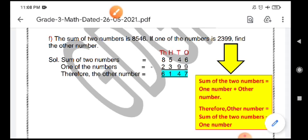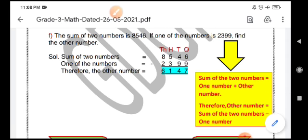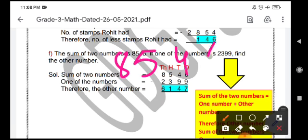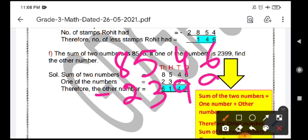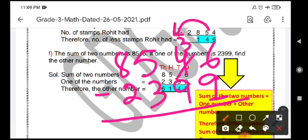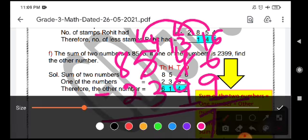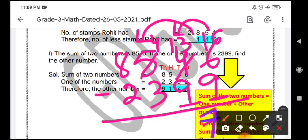So, we will subtract now these two numbers. That is 8546 minus 2399. More on floor, go to next door, get 10 more. Reduce it by 1 and 6 will be 16. 16 minus 9 is 7. 3 minus 9 is not possible. Get one more from hundreds place and reduce it by 1. 13 minus 9 is 4. 4 minus 3 is 1.